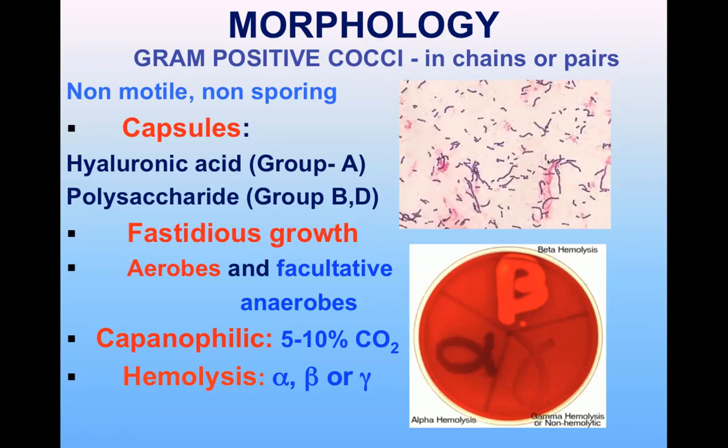These organisms are fastidious organisms, meaning they require special nutrients for their growth. In the case of streptococci, they require blood for their growth, and that is why the selective media is blood agar.